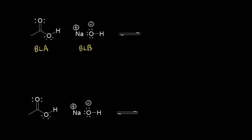So when you're drawing the mechanism, you use curved arrows to show the flow of electrons. These two electrons on hydroxide are the two that are going to grab the acidic proton on acetic acid. So there's my curved arrow — only the proton moves.